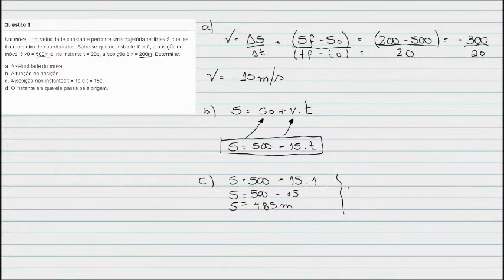Na C ainda pergunta no tempo igual a 15 segundos: é S igual a 500 menos 15 vezes 15. Então percebe para que serve a equação? Para eu conseguir encontrar a posição dele em qualquer instante. 15 vezes 15 é 225. Posição final é 275 metros.